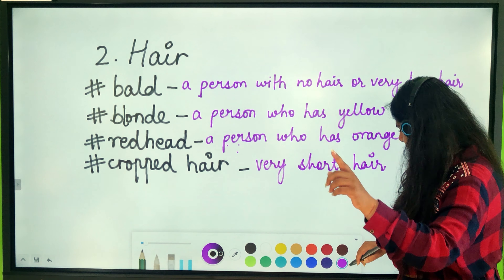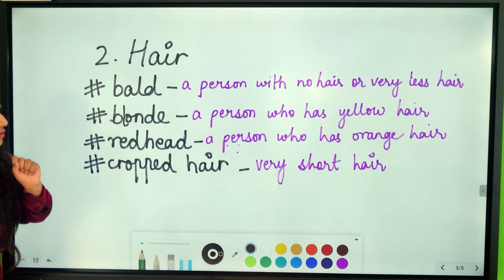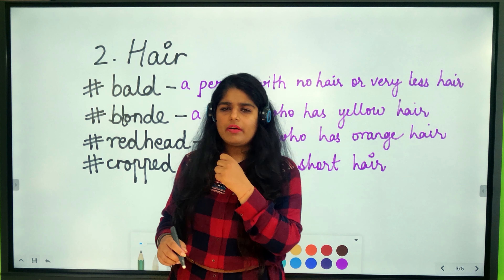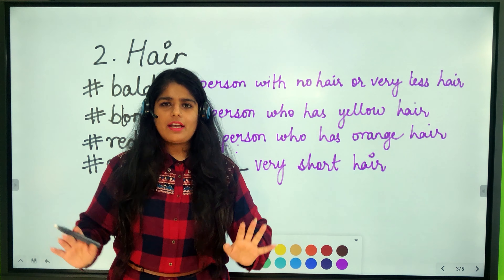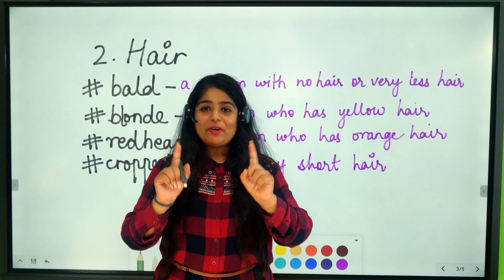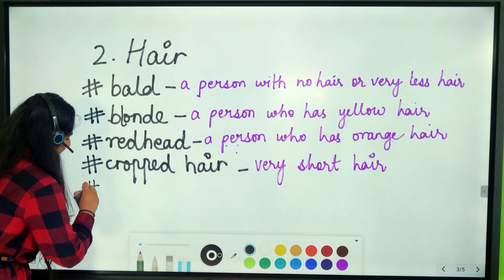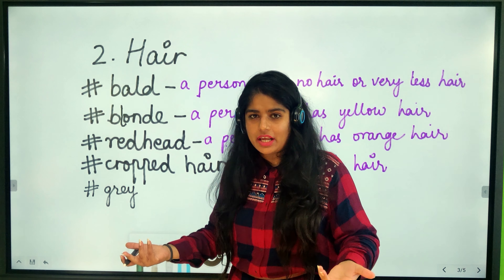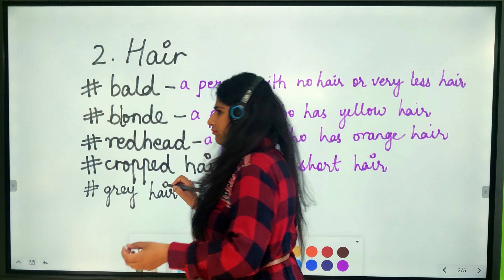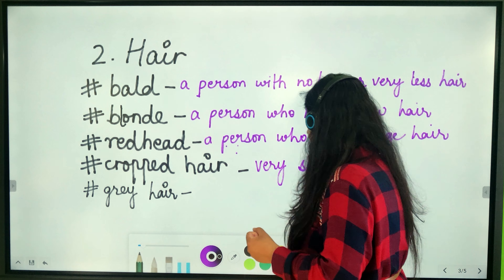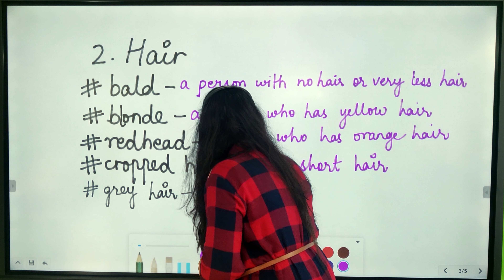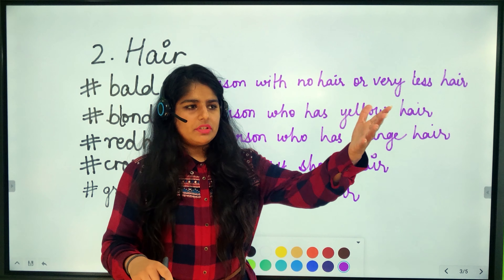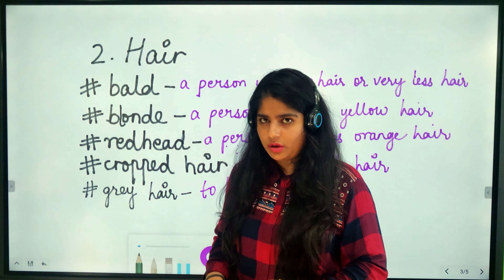One more important point about hair: what do you call white hair on older people? We don't say 'white hair' — we say 'gray hair.' Gray hair means the white hair that people usually develop as they get old. So gray hair actually refers to white hair — don't get confused.